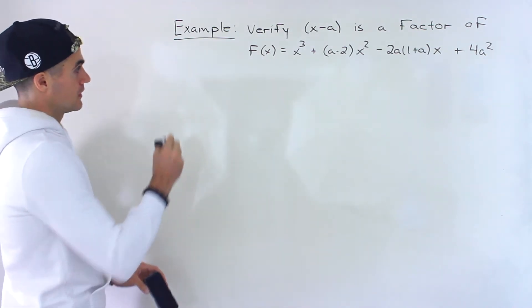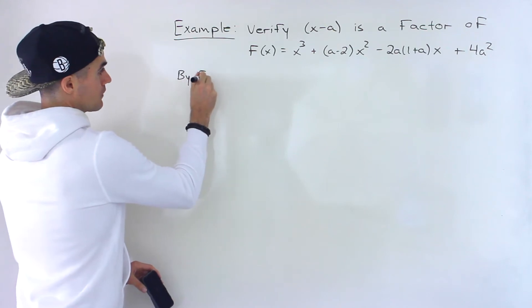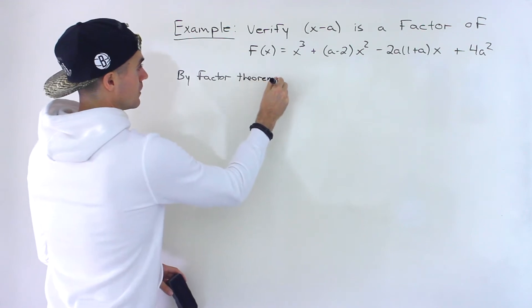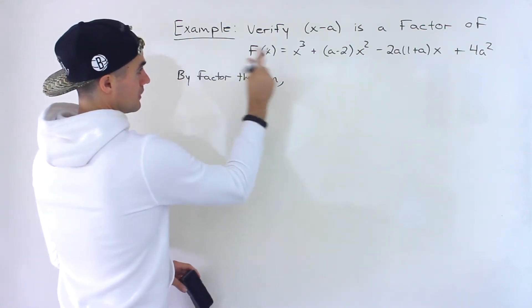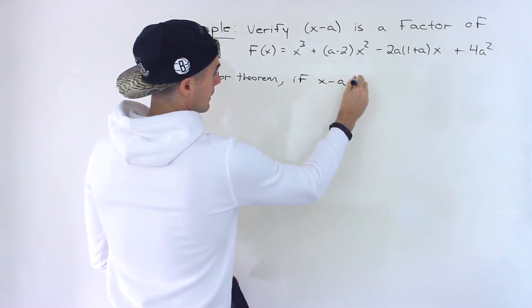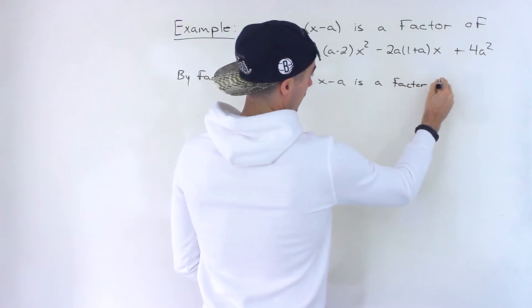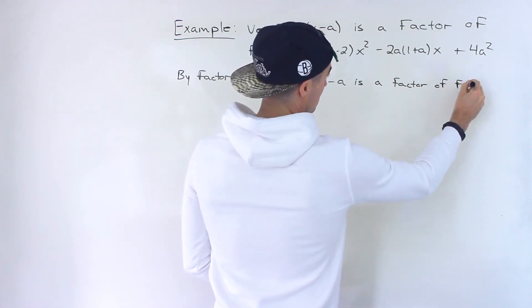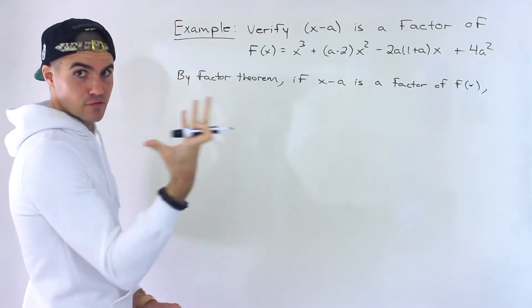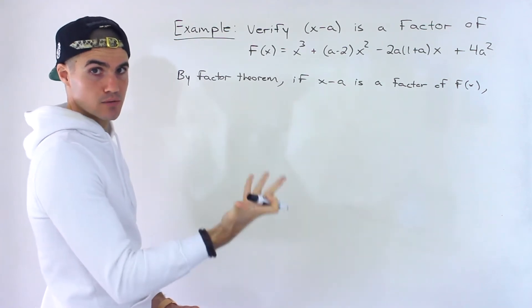Now, if you remember by the factor theorem, what does it state? Well, if x minus a is a factor of f of x, then that means when you take f of x, the polynomial, and divide it by x minus a, the remainder is going to be zero.